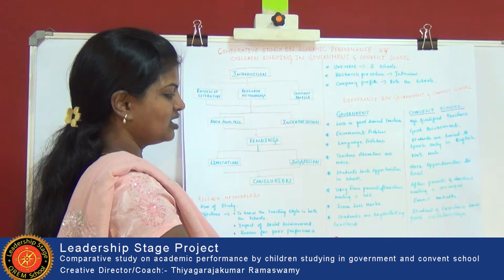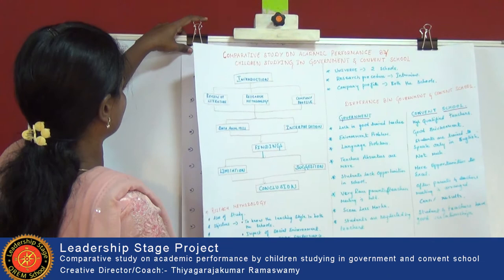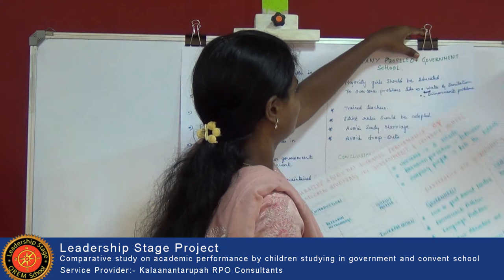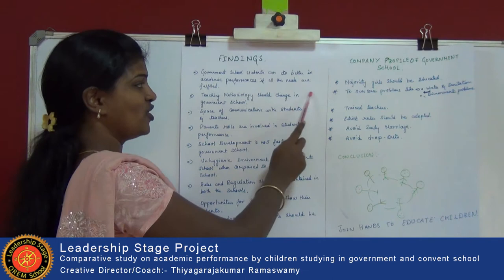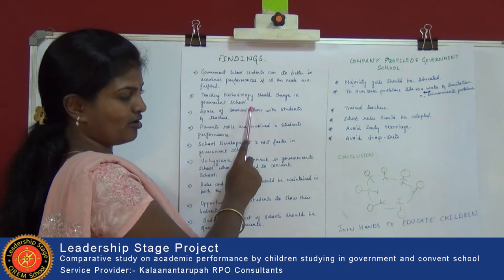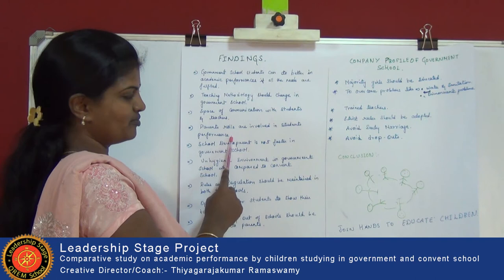Students are neglected by teachers in government schools, whereas in convent schools students and teachers have a good relationship. My finding is that government school students can do better in their academic performance if all their needs are fulfilled. The teaching methodology should be changed in government schools, and communication between students and teachers should be improved. Parents' role is also important in students' performance.